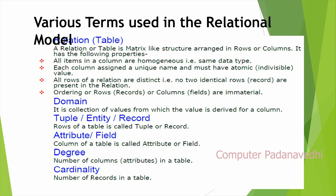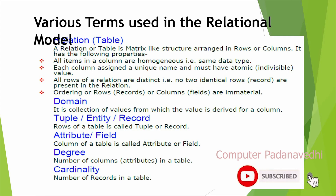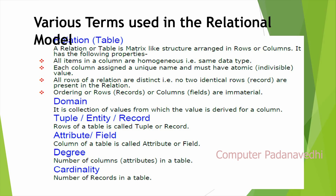In MySQL, as a relational database, we use some specific terms. First, table — all items in a column must be homogeneous, meaning the same data type. Each column must have a unique name and must have atomic, indivisible values. All rows of a relation are distinct — no duplicate rows. Ordering of rows and columns is immaterial.